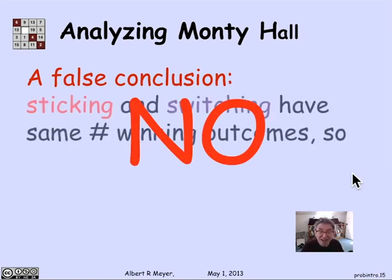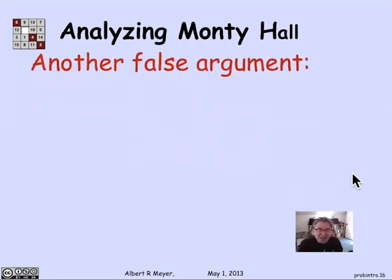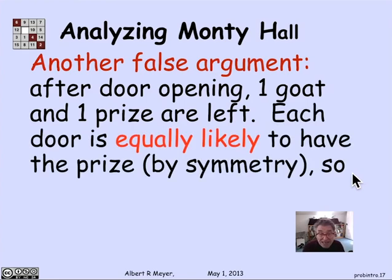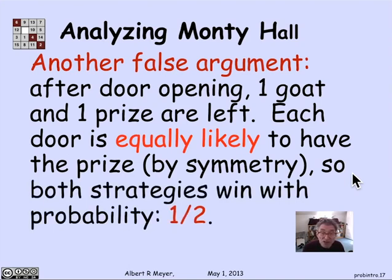The other false argument is that we think about what happens after Carol has opened a door. The contestant has picked a door, has no idea where the goat or the prize is. Carol opens a door and shows the contestant a goat. What's left? There are two closed doors left - one is the door with the prize, and the other is the door with a goat. By symmetry of the doors, the contestant has no idea what's behind either remaining closed door; they're equally likely to contain the prize. So the argument is, again, that whether you stick or switch between those two doors, it doesn't really matter - the stick and switch strategies each win with the same 50-50 probability. And that's wrong too.